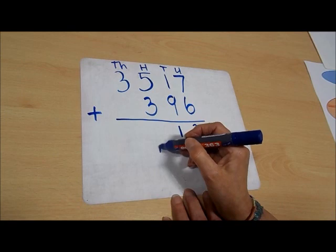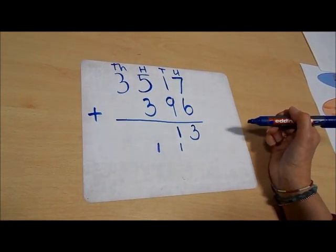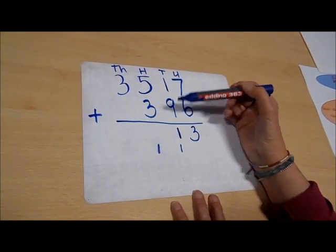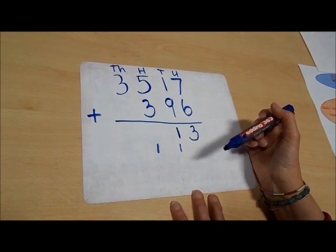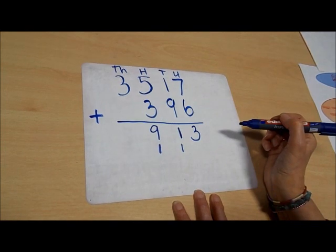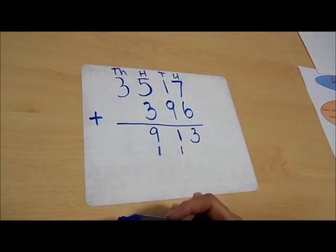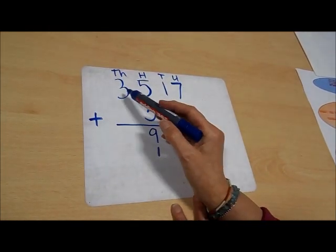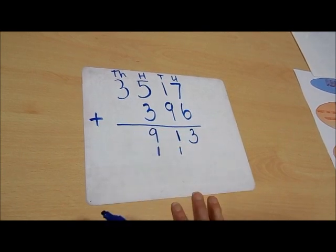Now we have 5 and 3 which makes 8, and one more which is 9. Looking at our thousands, we have 3,000 and nothing more to add.